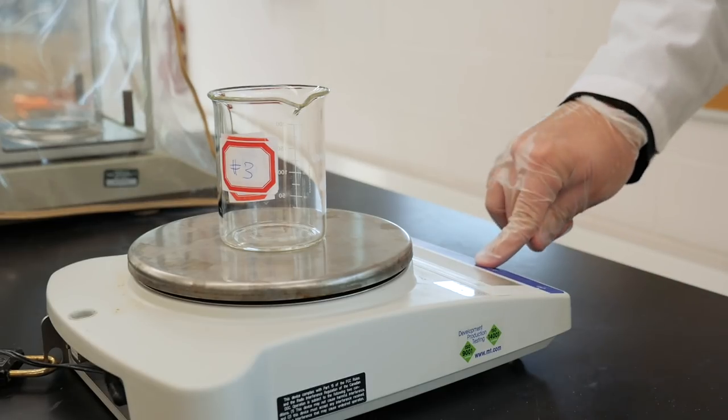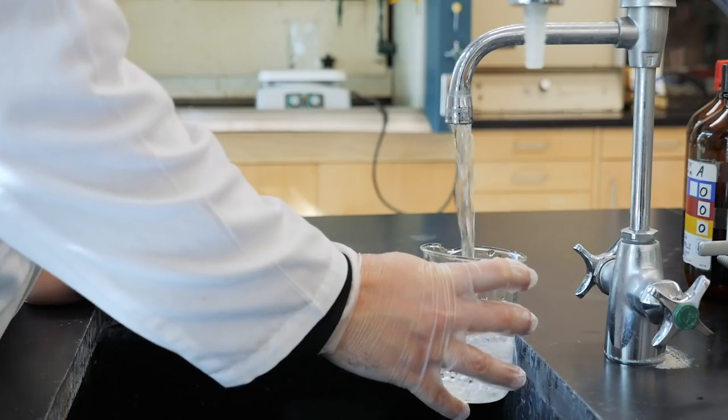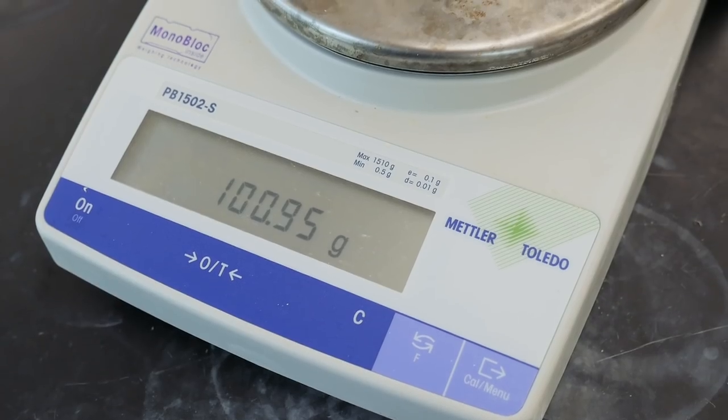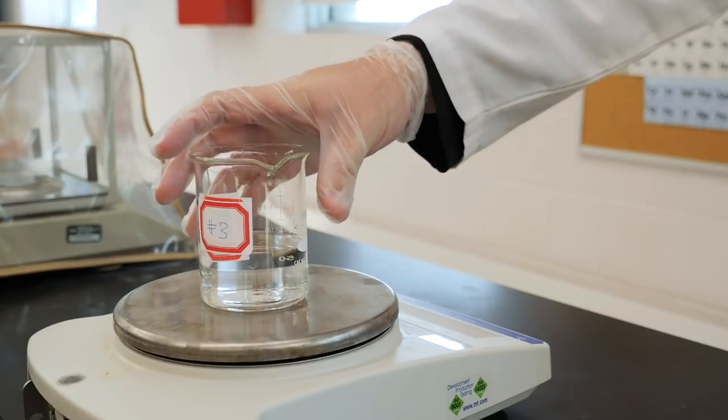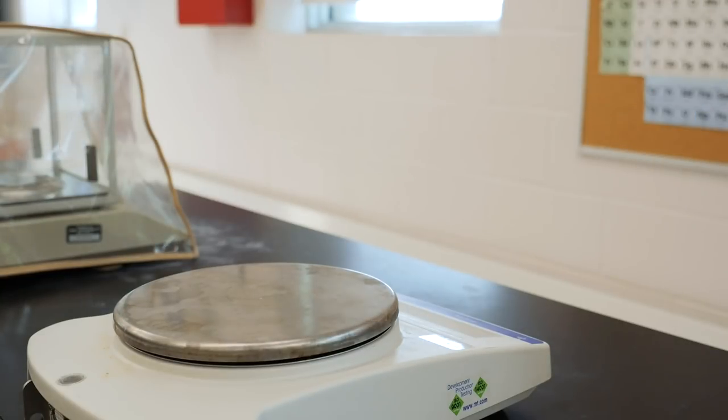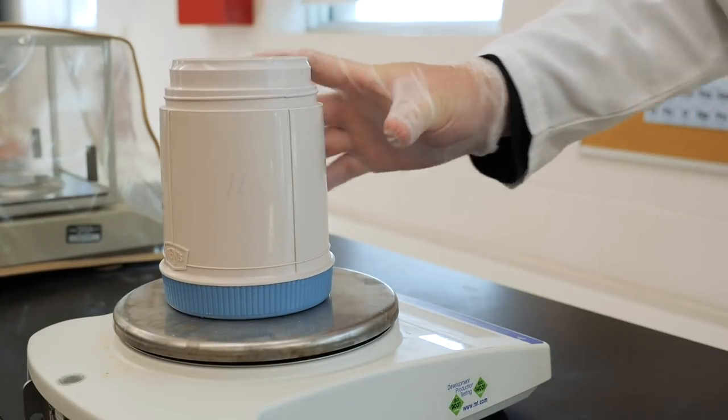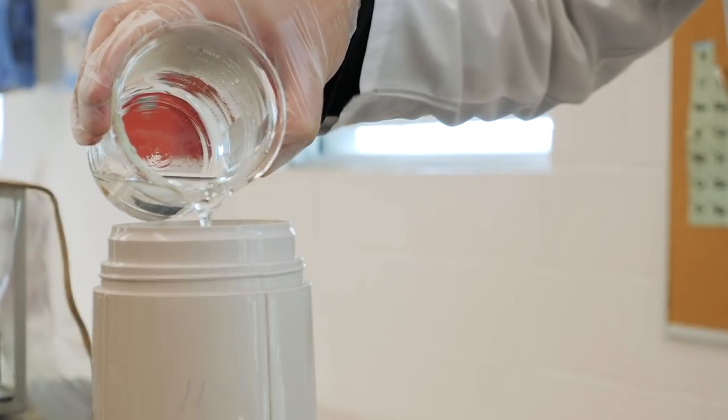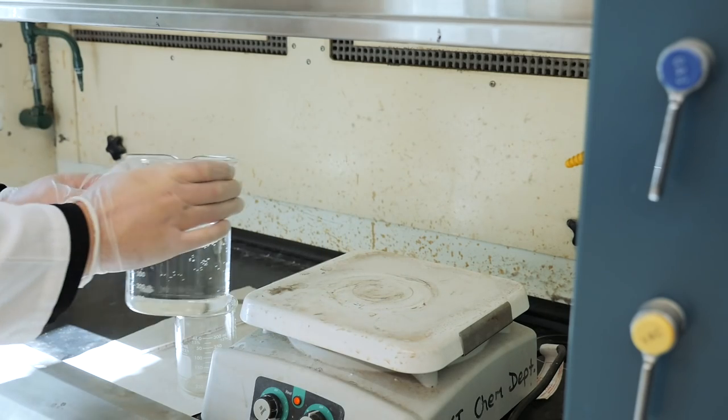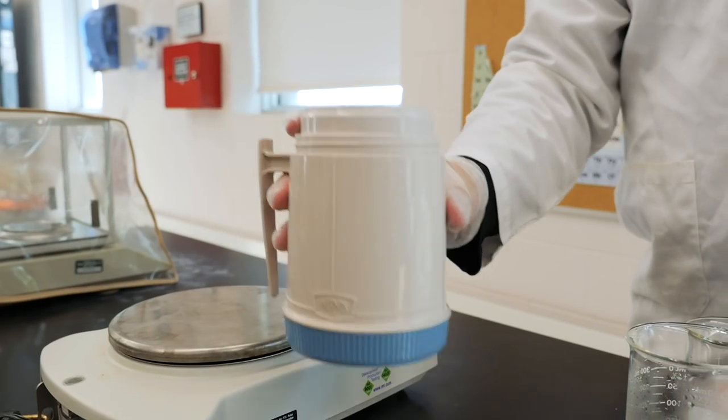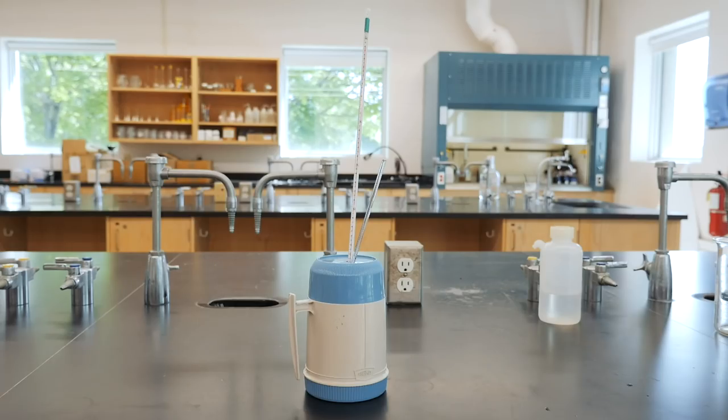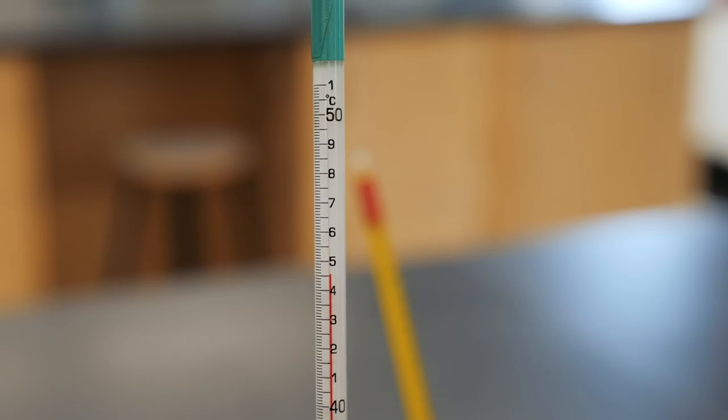Tear a 250 ml beaker on the rough balance and add about 100 grams of cold tap water. Record the mass of the water to the nearest 0.01 gram, then set it aside and record its temperature. Next, tear your calorimeter on the rough balance and add about 100 grams of hot water, which is available in the fume hood. Immediately put on the calorimeter lid and use the other thermometer to measure its temperature, which should be about 50 degrees when you begin.